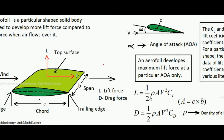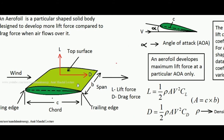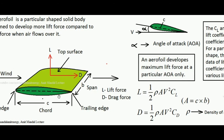The lift force developed on an aerofoil is given by: L = ½ρAV²C_L, where ρ is the density of air, A is the planform area (C × B), V is the velocity of wind, and C_L is the lift coefficient. C_L is aerofoil-specific — each shape of aerofoil has a particular lift coefficient determined experimentally, and the data is available in literature. Similarly, the drag force is D = ½ρAV²C_D, where C_D is the drag coefficient.